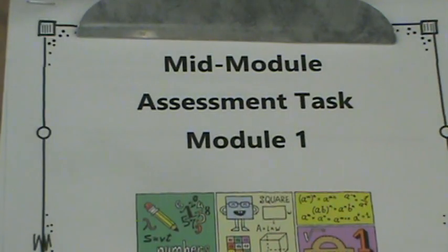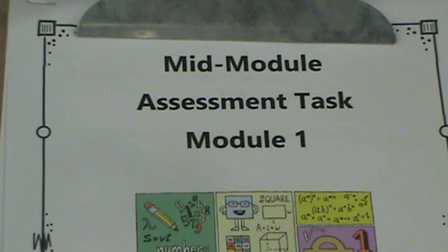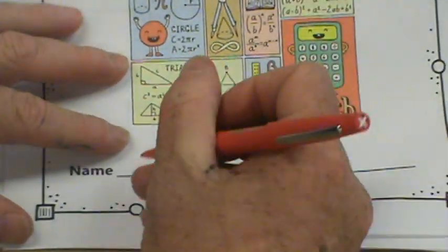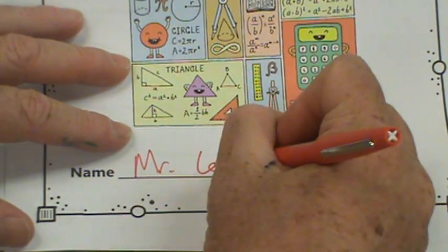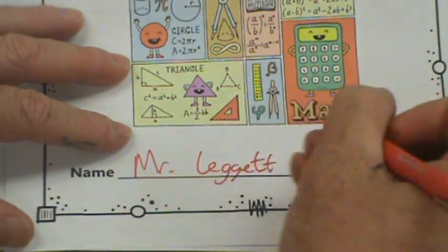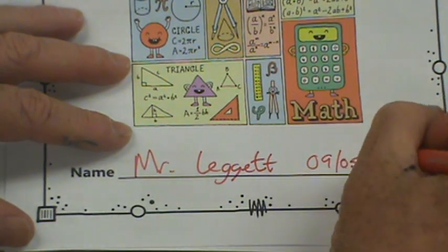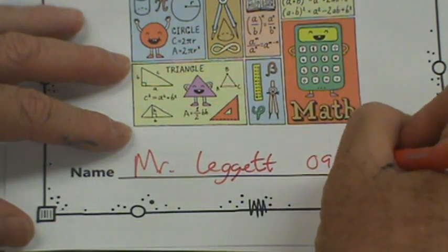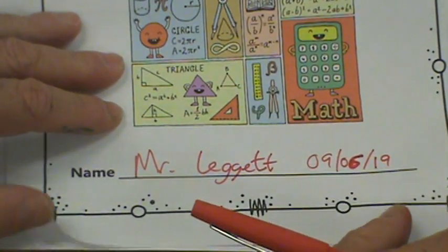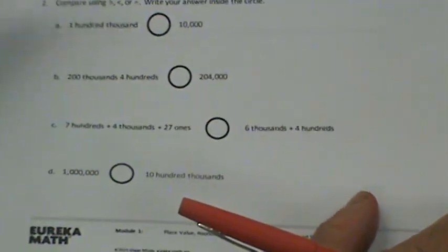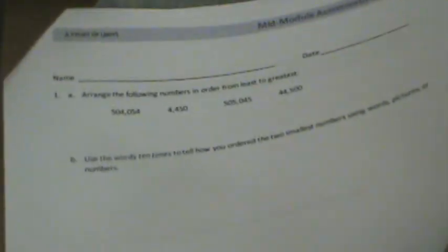And then get out your mid-module assessment task, Module 1. First thing you're going to want to do is make sure you have your name on it and today's date. There's my name. Let's do today's date. Tomorrow will be the 5th. I'm making this on Thursday. Excuse me, the 6th. So we have September 6, 2019. Let's turn the page. We do not need to put our name on this page because we have our name on the front cover.